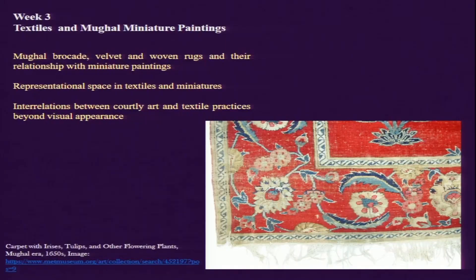Along with those things, we will also be venturing into the idea of representational spaces in textiles and miniature paintings. By representational space I mean the pictorial space on the textiles — for example, sarees, or a chick hung on the wall or in windows, or canopies and different kinds of textiles. Whatever is represented on the image area of those textiles is something we will be talking about this week.